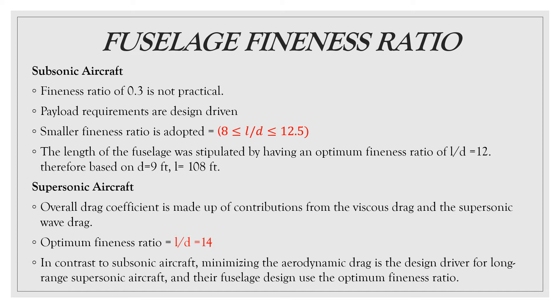If you compare, we can see that the L by D for subsonic is around 12, whereas L by D for supersonic is 14. In contrast to subsonic aircraft, minimizing the aerodynamic drag is the design driven for long range supersonic aircraft and their fuselage design use the optimum fineness ratio.